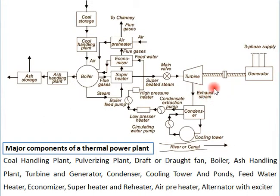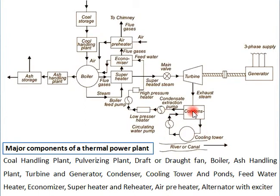Due to the expansion of steam, the steam temperature and pressure become very low and it exhausts from the turbine. This exhaust steam comes to the condenser, where it is condensed — the steam is converted into water with the help of some external cooling water. The function of the condenser is to change the phase of steam at constant pressure by removing the latent heat, converting steam into water.